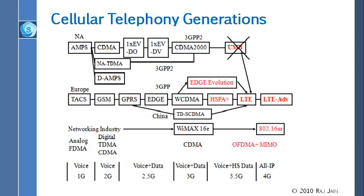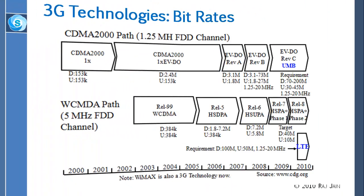The same transition challenge will happen going to 3.5G because LTE is OFDMA and all current systems are CDMA — it is not going to be a cheap transition. It will happen but it will take a long time, and some things we talk about today are still promises. The key lesson: 1G was analog FDMA, 2G/3G were TDMA and CDMA, and now the entire world — all three camps — is moving to OFDMA plus MIMO. CDMA's days are numbered.